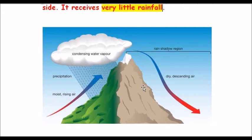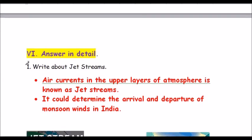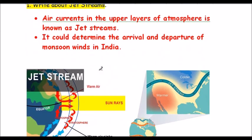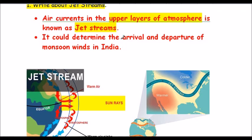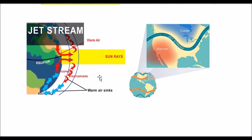Moving to Roman number six: Answer in detail. Question one: Write about jet streams. Air currents in the upper layers of the atmosphere are known as jet streams. They can determine the arrival and departure of monsoon winds in India. In the picture you can see the jet stream moving from warmer air to colder air.